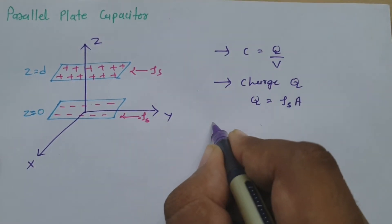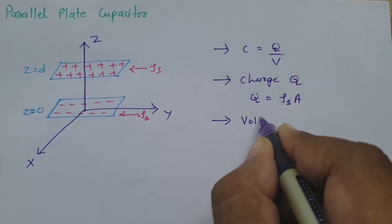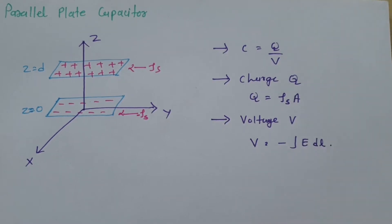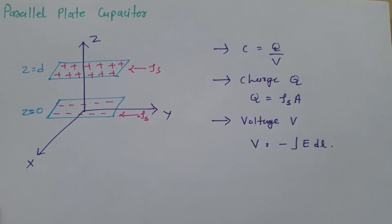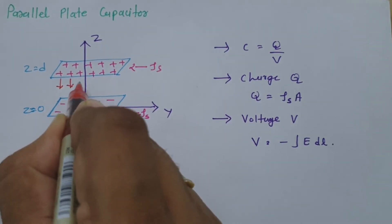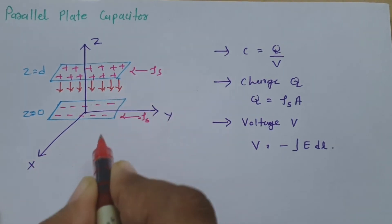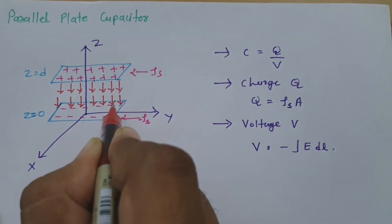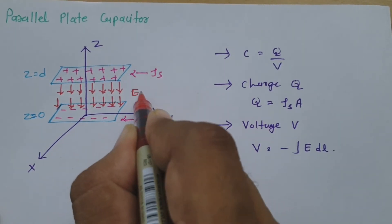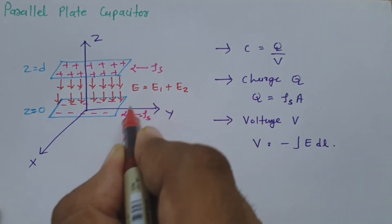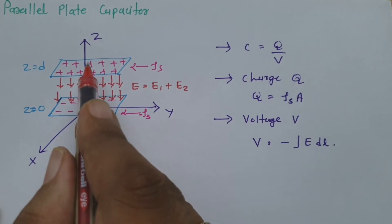How to calculate this voltage? We need to calculate the potential difference. Voltage V can be calculated as V equals minus integration of E dot dl. To calculate this, first of all we need to understand the direction of the electric field. Because of the plus charge, the direction of electric field is downward. And because of the minus charge, the direction of electric field is also in the same direction going inside the plate. So the total electric field is E1 plus E2, and that is happening in the minus z direction.